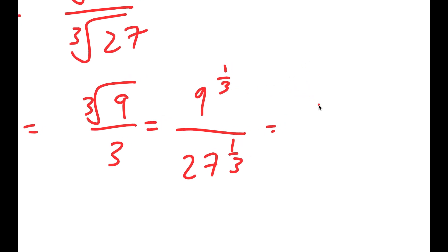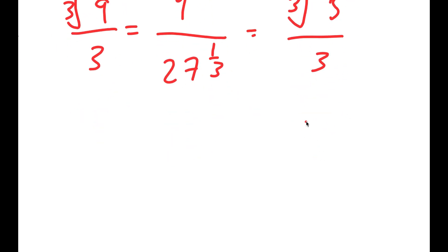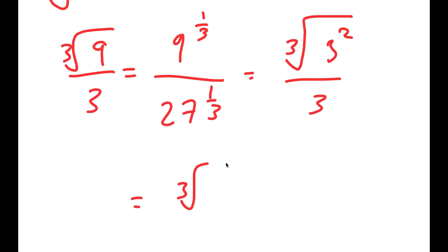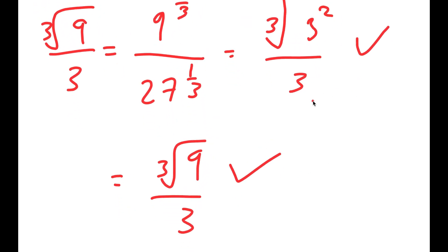And this is the same thing as we can write it in a couple different forms. So we can write this as the cube root of 3 squared over 3, or we could just also write it as the cube root of 9 over 3. So both of these are solutions.